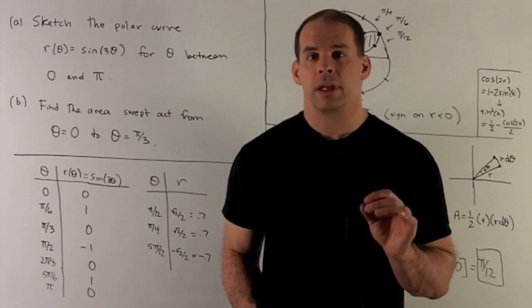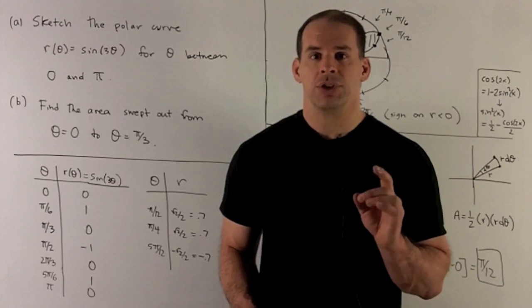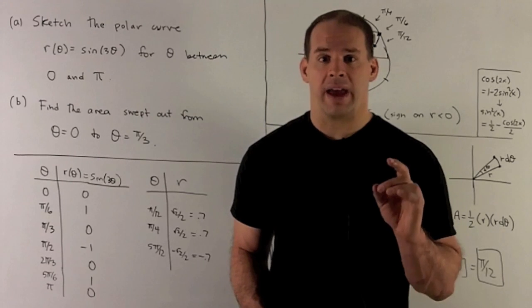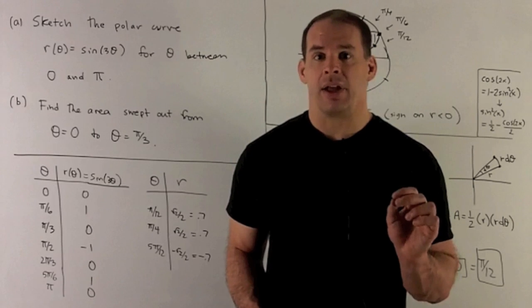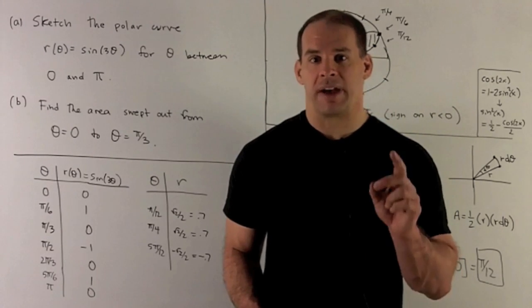Let's look at our function r(θ) = sin(3θ). It's tempting to put in the angles 0, π/2, π, 3π/2. If you do that, we're going to miss a lot of detail. So instead, I want to take those nice angles and divide by three.